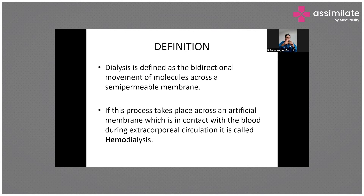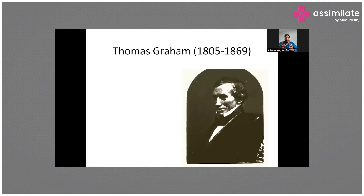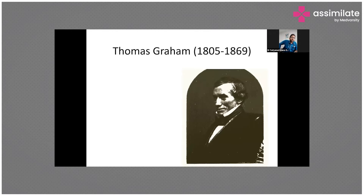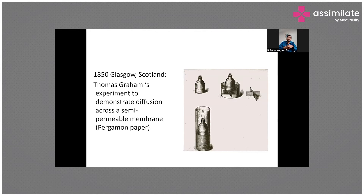The first person to introduce the concept of movement of solutes across a semi-permeable membrane was Thomas Graham, who lived from 1805 to 1869. He was from Glasgow, Scotland, and around 1850 he demonstrated the movement of molecules across a permeable membrane using parchment paper, showing that solutes can be moved across a membrane when a concentration gradient exists.